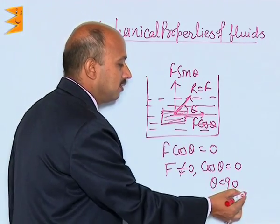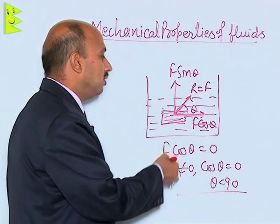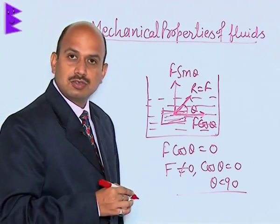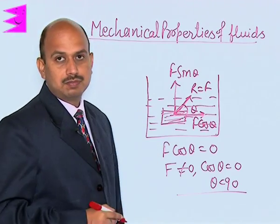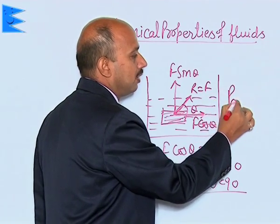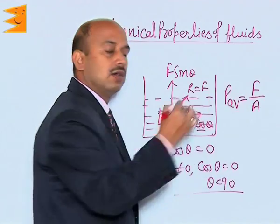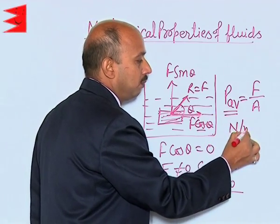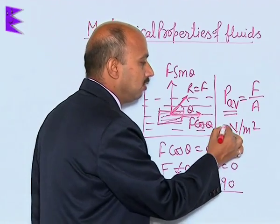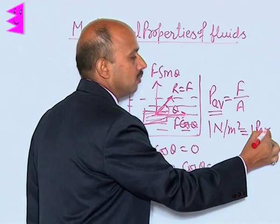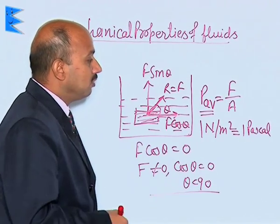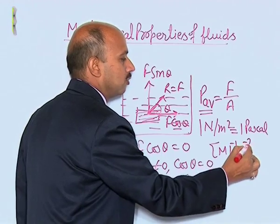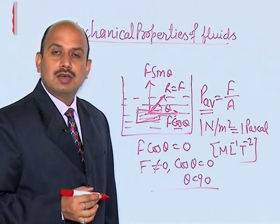From this example it is clear that if the liquid is at rest and any body is submerged inside it, the force applied by the liquid is normal to the surface. This is known as thrust. Thrust per unit area is known as pressure. So average pressure equals force divided by area. The SI unit of pressure is Newton per meter square, and 1 Newton per meter square is written as 1 Pascal. The dimensional formula of pressure is M L⁻¹ T⁻². Pressure is a scalar quantity.